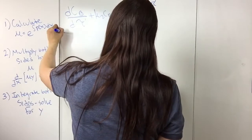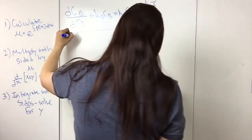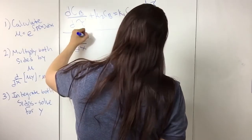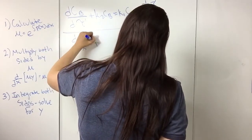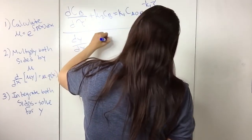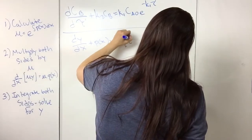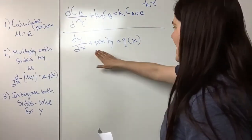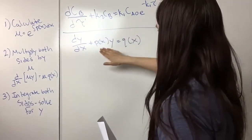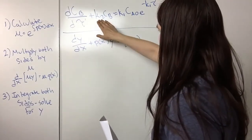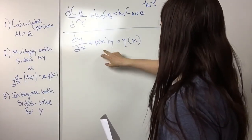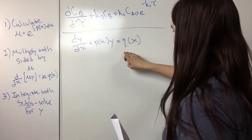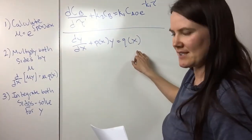You're assuming an equation in the form dy/dx + P(x)·y = Q(x). Looking at the equation we have, we can see it's in this form. So K2 would be P(x), and K1·CA0·e^(−K1·τ) would be Q(x).